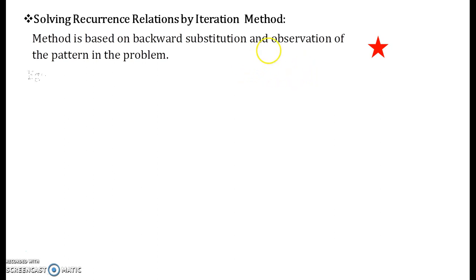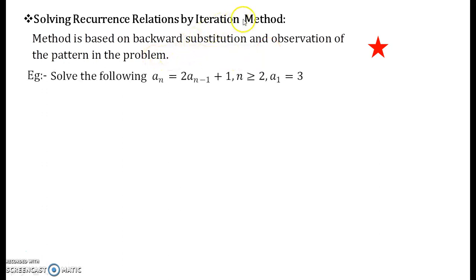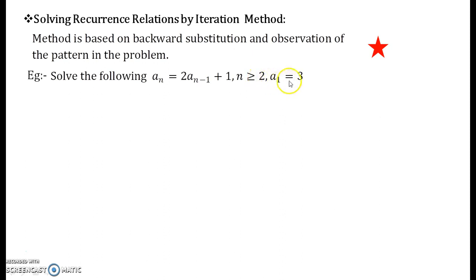Now let us take up an example to solve using the iteration method. Our recurrence relation is aₙ = 2aₙ₋₁ + 1, where n is greater than or equal to 2, and a₁ = 3. This a₁ = 3 is the initial condition.